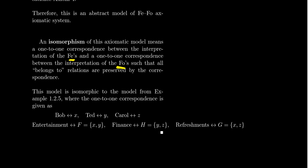That relation is preserved. Bob belonged to the entertainment committee. X belongs to F. That's preserved. Ted belonged to the entertainment committee. Y belongs to the F set. So yeah, that is satisfied.